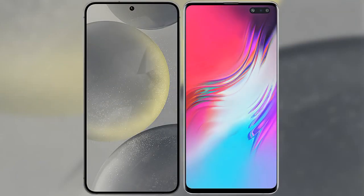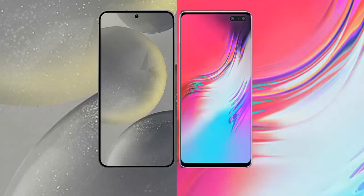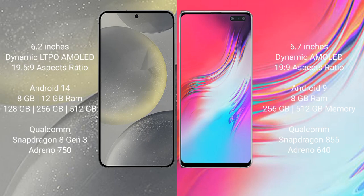I will compare the new Samsung Galaxy S24 with Samsung Galaxy S10. Samsung Galaxy S24 comes with a 6.2-inch dynamic LTPO AMOLED display and 16-to-9 aspect ratio. Samsung Galaxy S10 comes with a 6.7-inch dynamic AMOLED display and 16-to-9 aspect ratio.